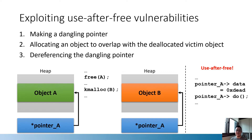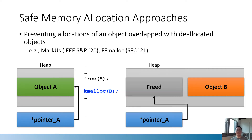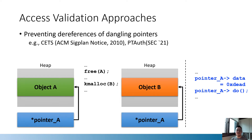We can classify defense mechanisms based on what they prevent. The first class of use-after-free defenses is called Pointer Invalidation — they prevent the creation of a dangling pointer by invalidating pointers that point to allocated memory regions. Next, Safe Memory Allocation approaches prevent allocations of objects to memory areas previously occupied by other objects. Lastly, Access Validation approaches attempt to prevent use-after-free attacks by validating every pointer dereference. While these approaches provide strong security and acceptable memory overhead, they all incur high runtime overhead because they must check all pointer dereferences during runtime.